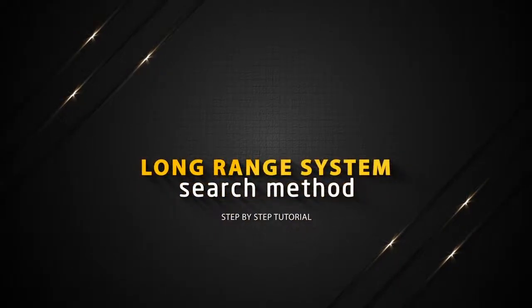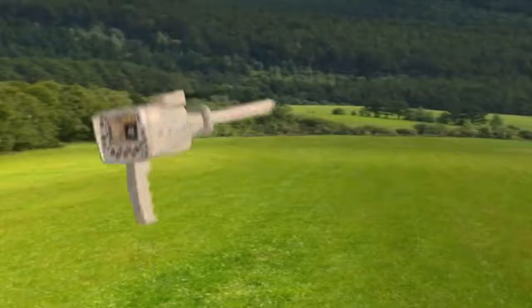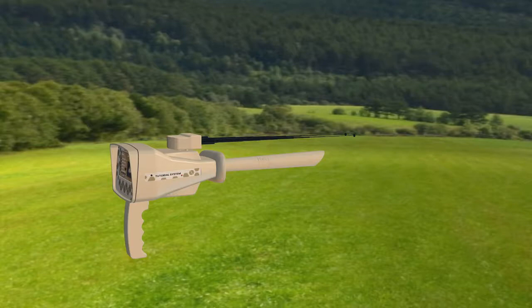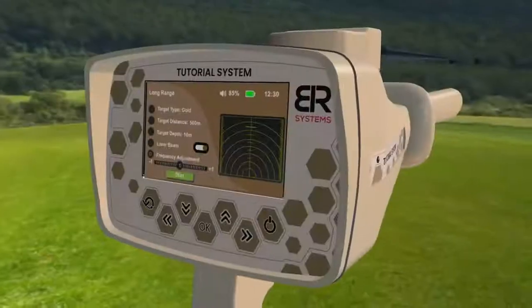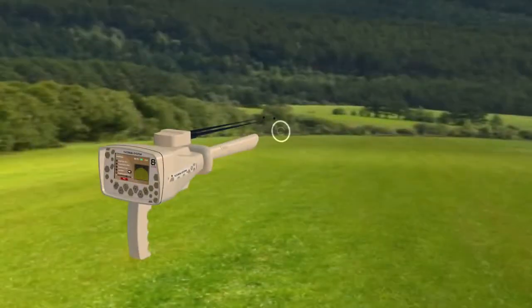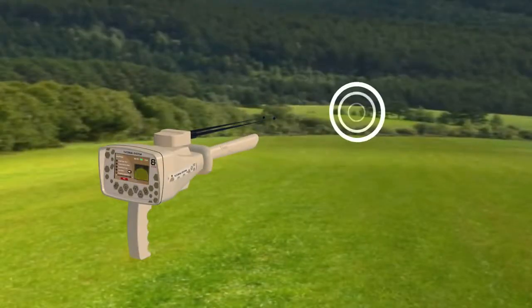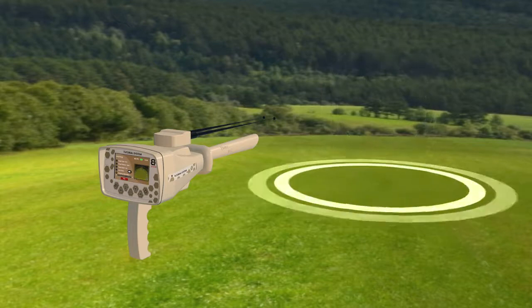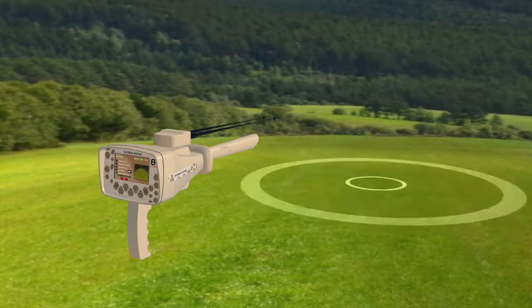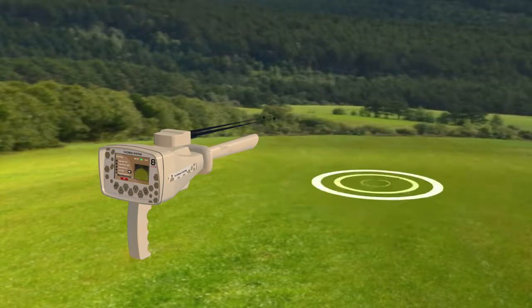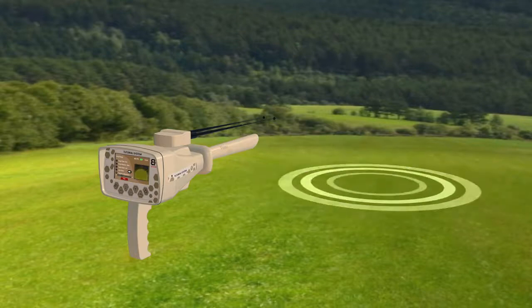Long Range System Search Method. Hold the device handle horizontally towards the front to start the search process. Press the start button. Then the device starts sending signals through the Long Range Signal Transmitter where the signals stimulate the electrostatic field of a specific target within the search field if it exists.